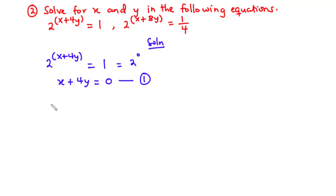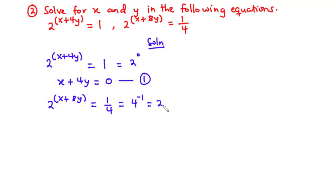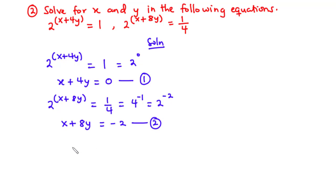For the second equation, 2 exponent x plus 8y equals 1 over 4. Now 1 over 4 is the same as 4 exponent negative 1, and 4 is 2 exponent 2, so this becomes 2 exponent negative 2. Since the bases are the same, we compare exponents and get x plus 8y equals negative 2. We call this equation 2.